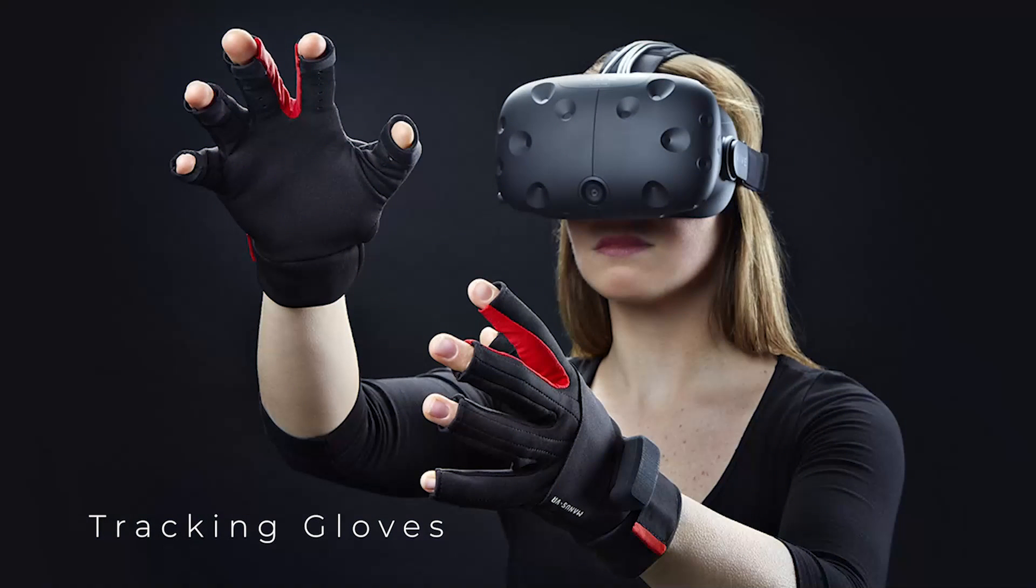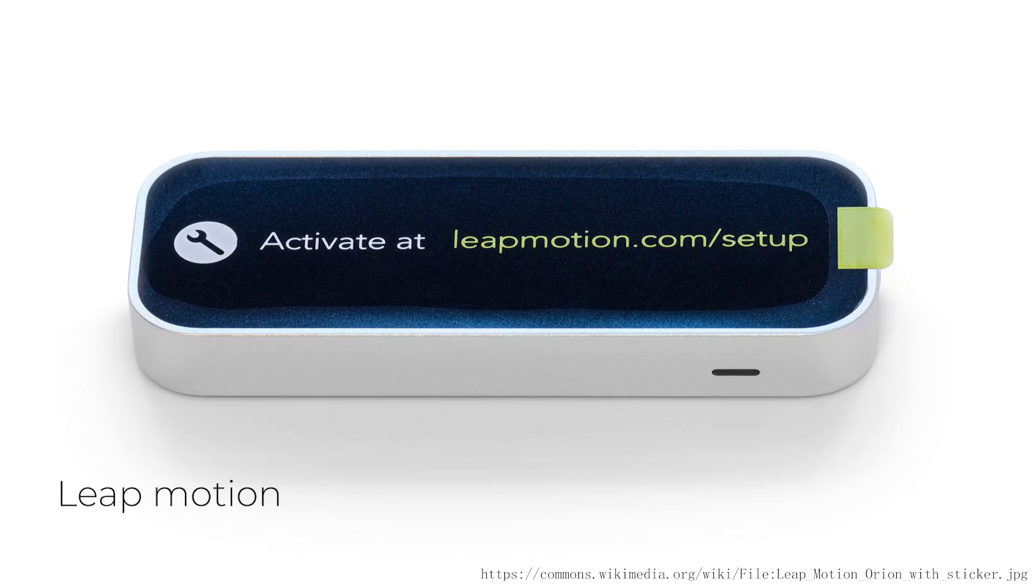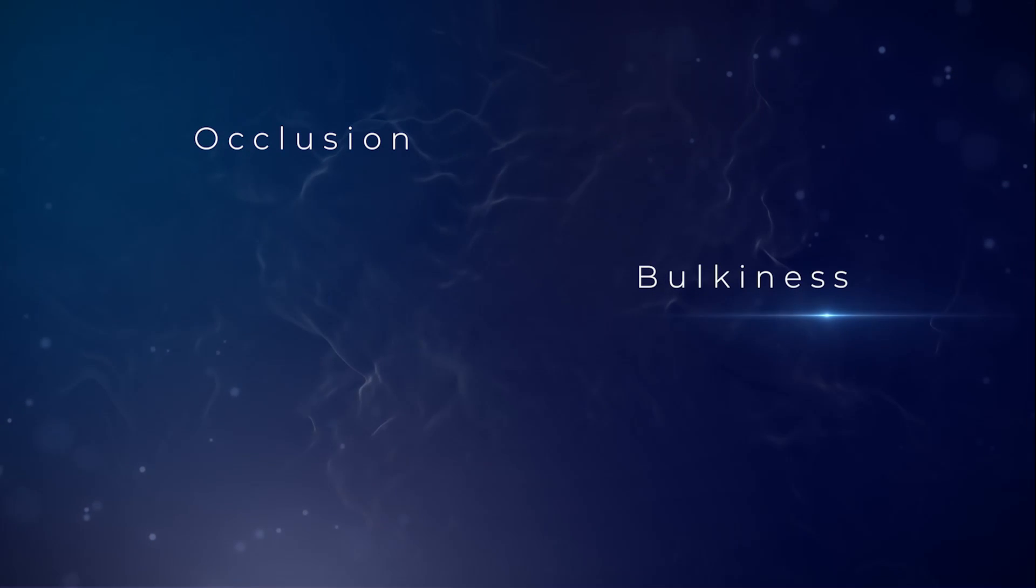Currently, tracking gloves, wrist-mounted IR cameras, and off-the-shelf hand controllers like Leap Motion can classify hand gestures or reconstruct full hand poses. However, they suffer from occlusion, bulkiness, or non-portability.